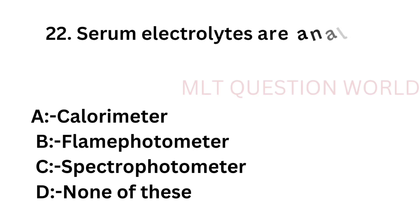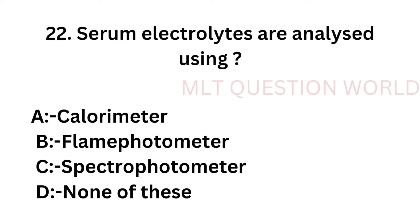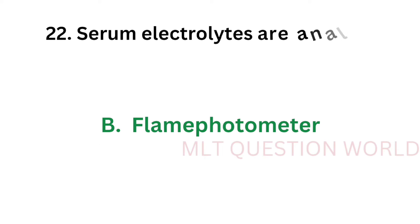Question number 22: Serum electrolytes are analyzed using — option A: Colorimeter, option B: Flame photometer, option C: Spectrophotometer, option D: None of these. The correct answer is option B, flame photometer. Serum electrolytes are analyzed using a flame photometer.